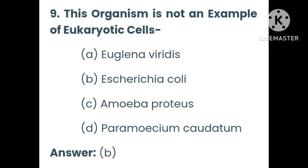Which organism is not an example of eukaryotic cells: Euglena, Firitis, Escherichia coli, Amoeba proteus, or Paramecium caudatum? The answer is B — Escherichia coli.